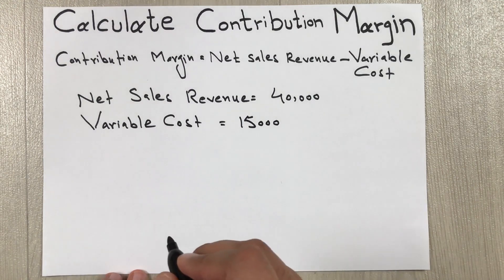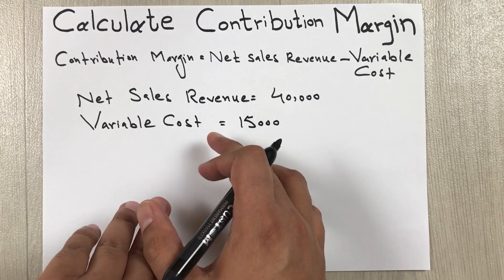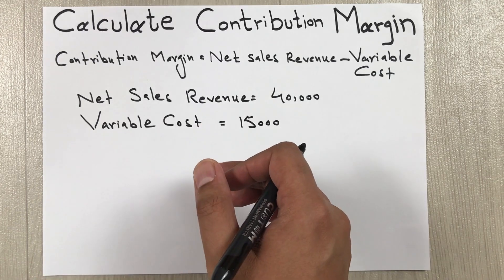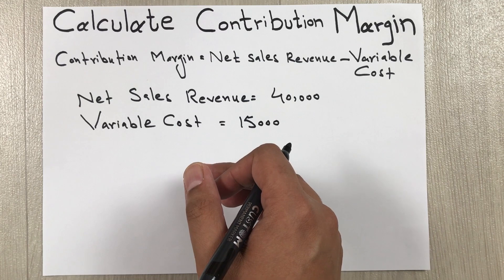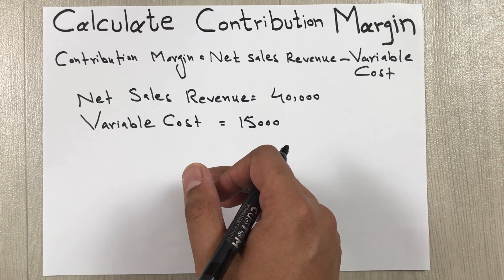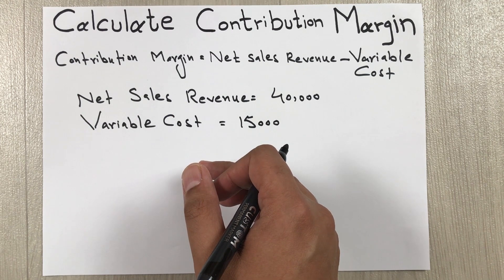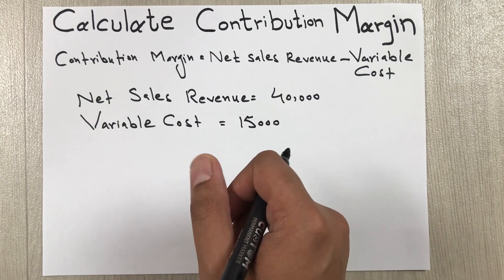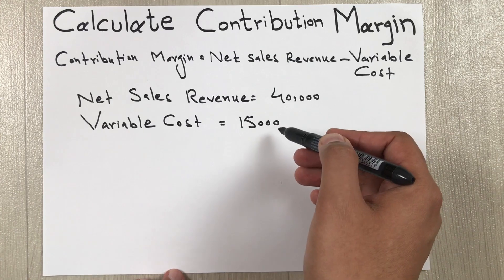Variable cost is the cost that is not fixed — it changes according to sales and production. Examples of variable cost are labor and raw material. Now as you can see we have our values.